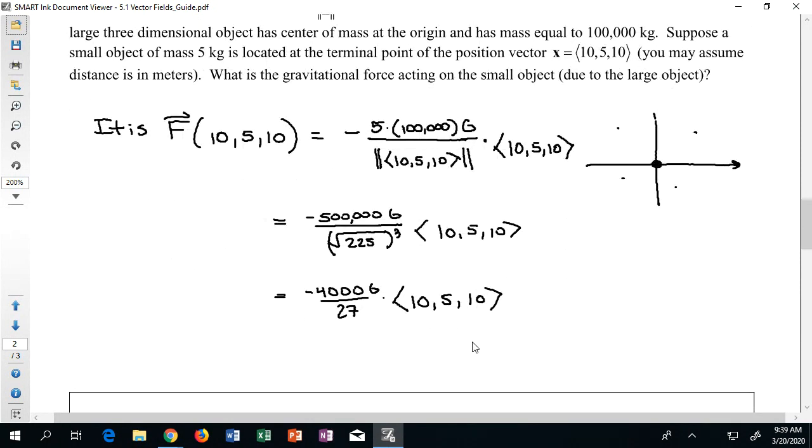So ultimately, the vector that I would end up with would be the following. It would be like negative 40,000 g over 27, negative 20,000 g over 27, and finally negative 40,000 g over 27. So this would be the force that acts on that object.